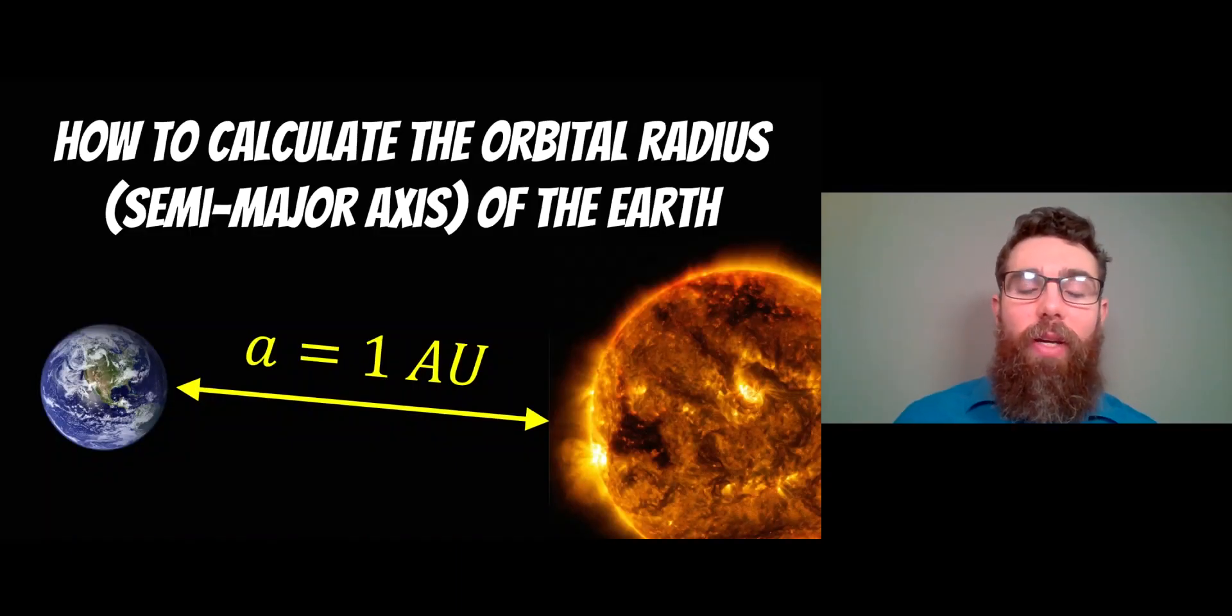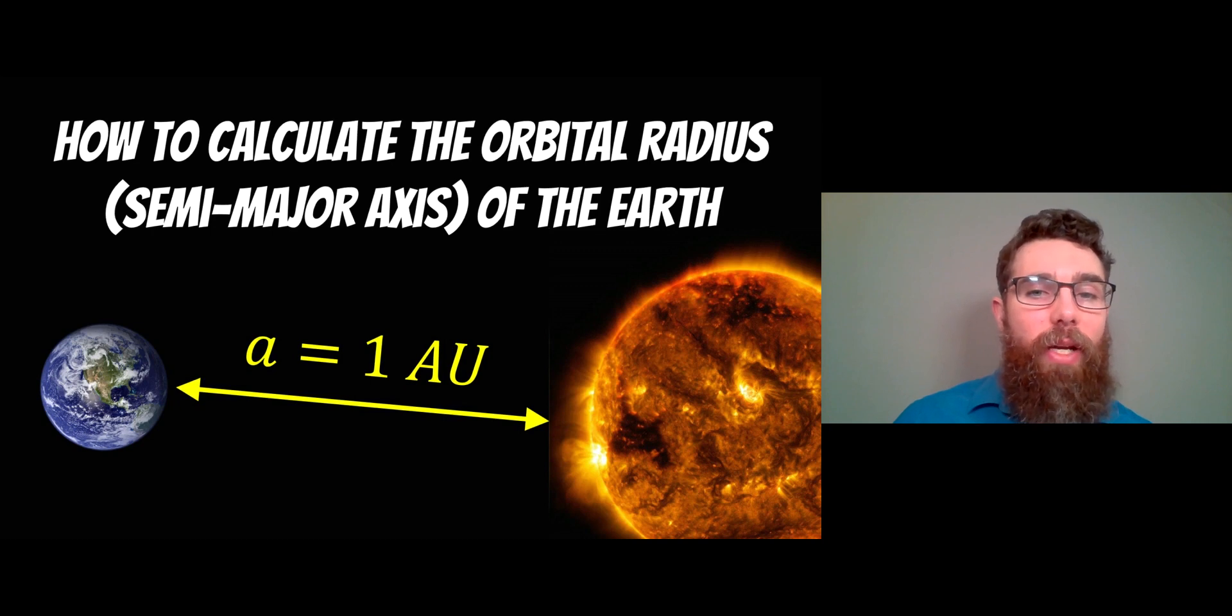Welcome to this video about how to calculate the orbital radius of Earth. It's also known as the semi-major axis, written as a = 1 AU. So a is the semi-major axis and 1 AU is one astronomical unit, which we'll explain towards the end of the video.